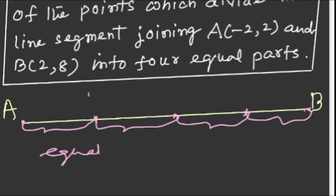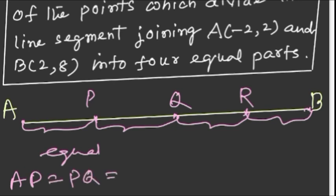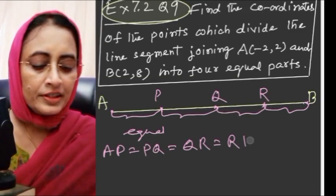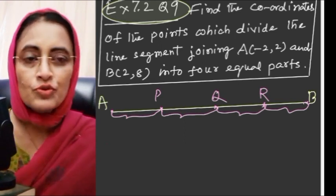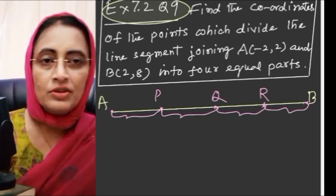Suppose we name the dividing points P, Q, R. So AP = PQ = QR = RB. To find their coordinates, we will use the section formula.